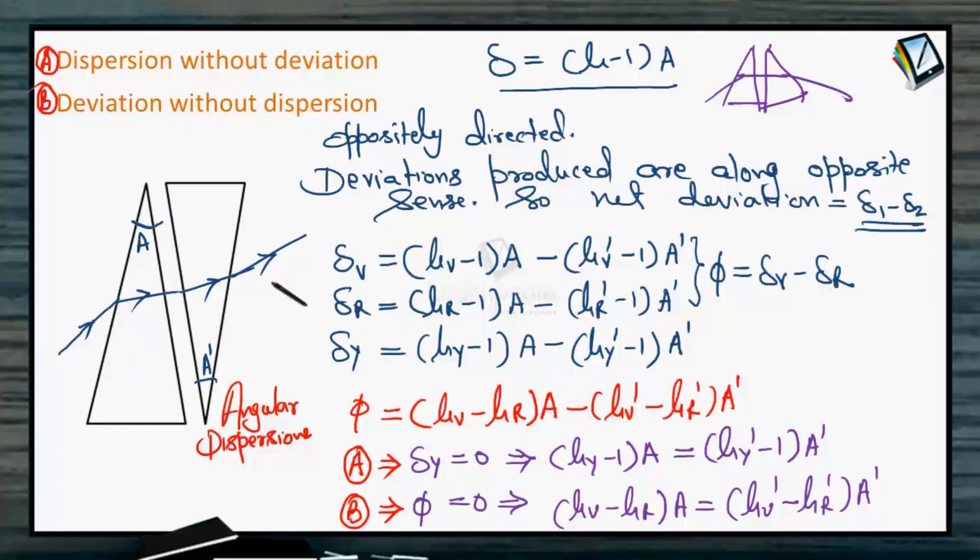So that will be the difference that you can understand on your own. If prisms are oppositely directed, then deviations are to be subtracted from each other. And if they are similarly directed, then to find the total deviation, you will have to add the individual deviations. The rest is the same.